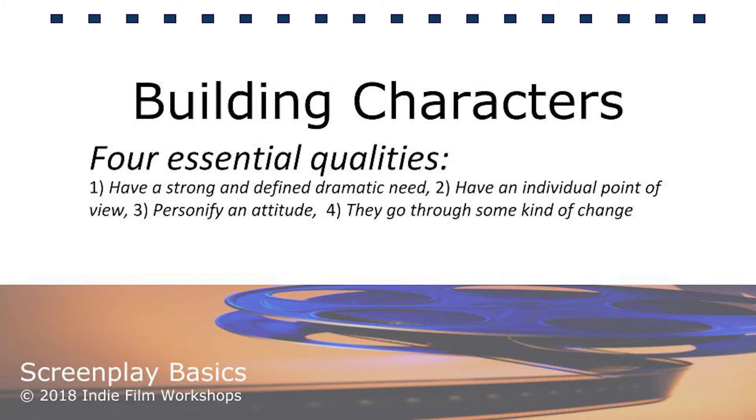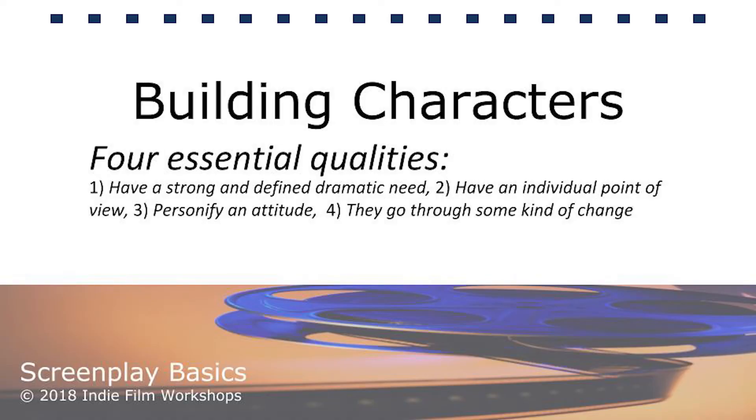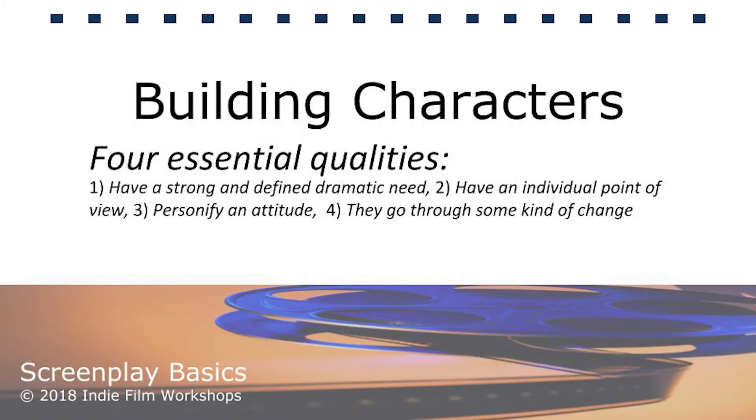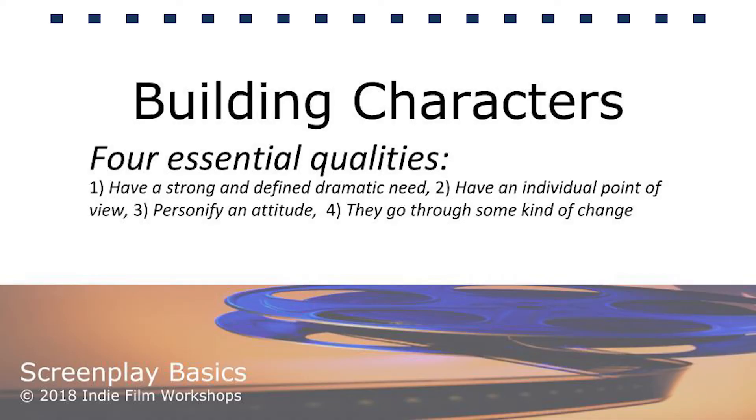Now let's talk about the qualities of characters. There are four essential qualities that every three-dimensional character must have. Without all four, characters are really nothing more than a prop. Number one: they have to have a strong and defined dramatic need — the audience must see what the character's true motivation is. In Avengers: Age of Ultron, Tony Stark's dramatic need was to 'put a suit of armor around the world.' Number two: they must have an individual point of view. In Lawrence of Arabia, Sir Lawrence thought that the Arab states would become a great nation independent of British rule, even though he himself was a British soldier. Number three: they must personify an attitude. In Open Range, Charlie Postleway personified the cowboy life. Number four: they must go through some kind of change. In Forrest Gump, Lieutenant Dan hates his life as a wounded warrior from Vietnam, but he learns to heal and embrace his life — so much so that he takes a Vietnamese bride.